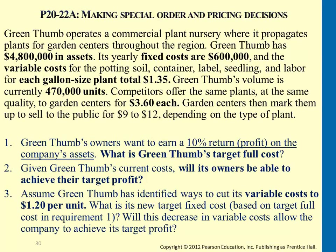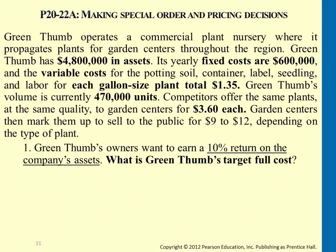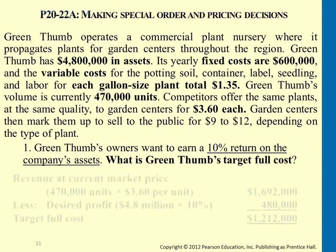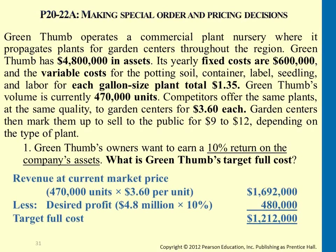You got part of it correct, especially the second part — what is the actual cost of the product. But for the first question on target cost, since $3.60 is already the market-demanding price, you multiply that by the number of units. Then you need to consider the desired profit, which is $4.8 million multiplied by 10%. This problem tells you to calculate it as 10% of assets.